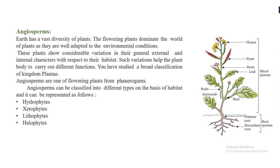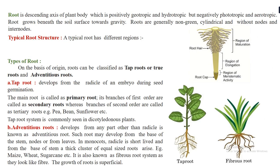So those are the four basic types of angiosperms classified on the basis of their habitat. An angiospermic plant has a root system, a stem with branches that bear leaves, flowers, and fruits. The root is considered the descending axis of the plant body, which is positively geotropic and hydrotropic — meaning roots grow towards gravity and towards water bodies.